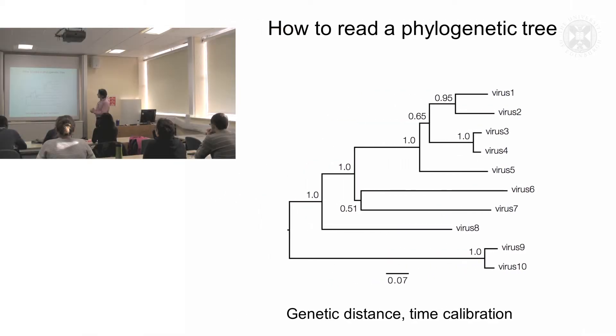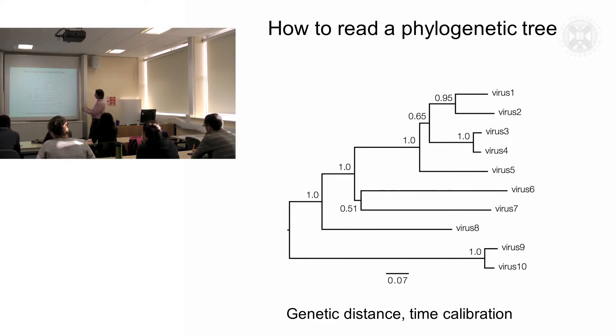We see these branches, the length of these branches represents genetic distance. Going horizontally we can see that these viruses here, viruses 9 and 10, are more distantly related to all of the other viruses. It is the length of the horizontal lines which is important in inferring genetic distance.